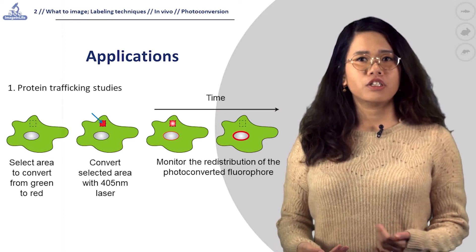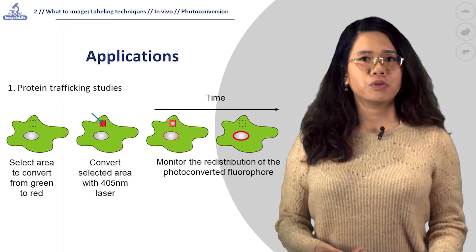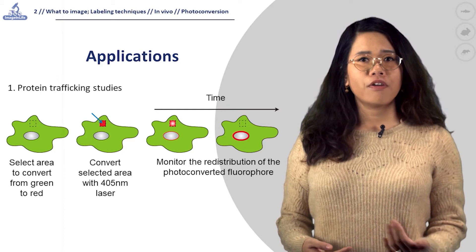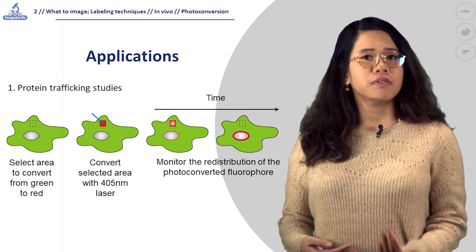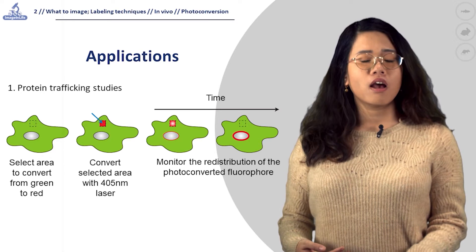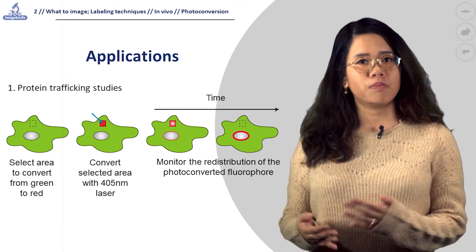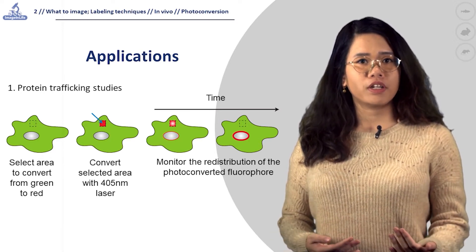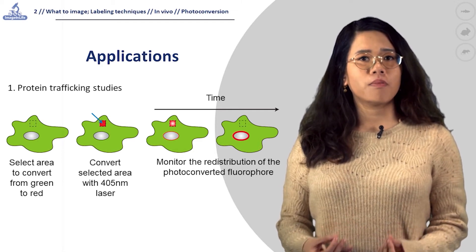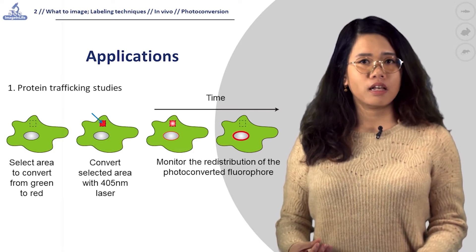Fluorescent proteins such as GFP or M-Sherry are classical powerful tools to visualize cellular components in living cells. However, there are circumstances when these classical fluorescent proteins reach their limits. For example, to highlight a spatially limited protein population to assess trafficking or degradation cannot be achieved using common fluorescent proteins, as they are expressed throughout the entire cell.